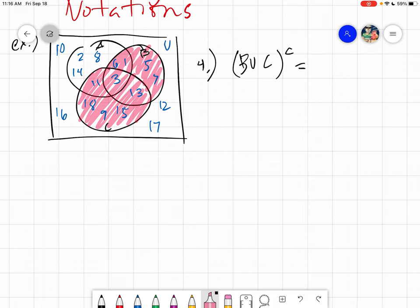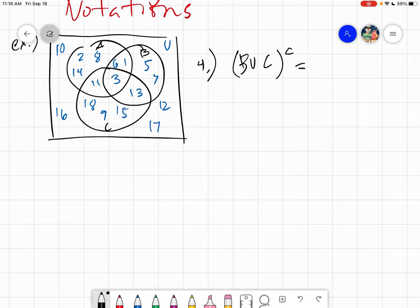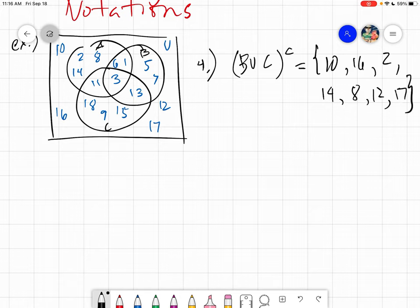Since the set operation we used is B union C, everything we will take except for this. It means we will exclude this part. Instead of taking it, you will exclude it. And what are those elements? These are those elements. So this would simply be 10, 16, 2, 14, 8, 12, and 17. And that is our B union C complement.